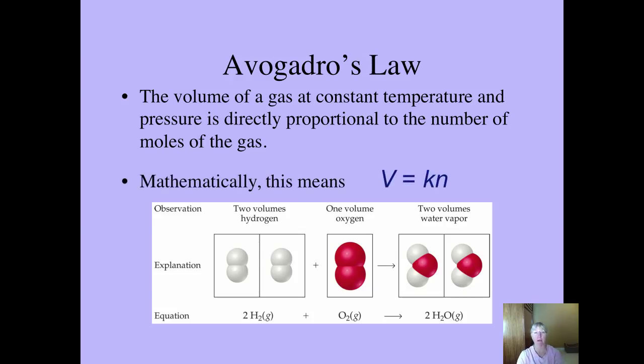And mathematically, you can express that as volume equals a constant times n. Or another way to say that is, volume divided by the number of moles always equal to constant. So if we make the number of moles get bigger, then the volume gets bigger, as long as this number k is a constant, which it is.